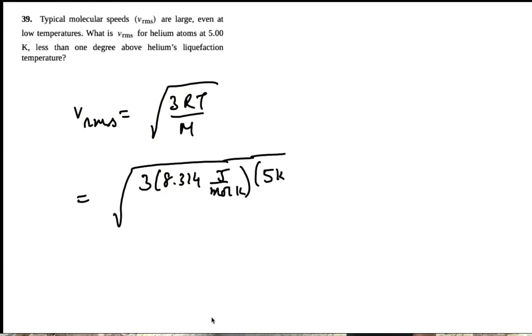And temperature is 5 kelvin. The molar mass is 4 grams per mole. The gram is 10 to the minus 3 kilograms per mole.